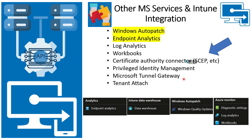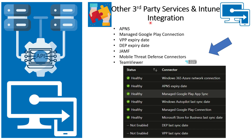For me, tenant attach is a third-party integration experience, and Certificate Authority connector and Tunnel may also be third-party integration experiences. For other third-party services: APNs is required for Apple device management, ABM (Apple Business Manager) and ASM (Apple School Manager) are the enrollment options discussed in the last video — all these connections are required for Apple device management with enhanced features. There is also Managed Google Play, and an integration with Jamf for macOS management.